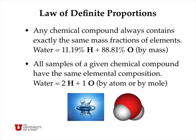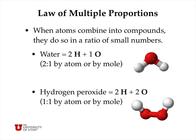We can recast the law of definite proportions in a slightly different way by saying that all samples of a given compound have the same elemental composition. So water, for example, always has twice as many hydrogen atoms as oxygen atoms. Or, if you count by moles — and we'll see what a mole is in the next lesson — every mole of water has two moles of hydrogen atoms and one mole of oxygen atoms. This 2-to-1 ratio is the elemental composition of water. The law of definite proportions can be expressed either in terms of atoms (2 to 1) or in terms of mass fractions (11.19% and so on).